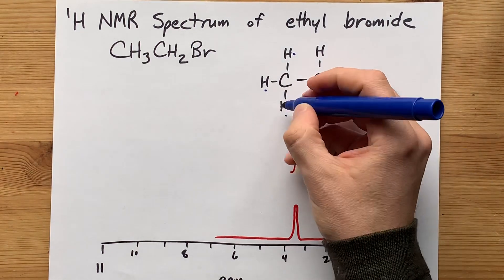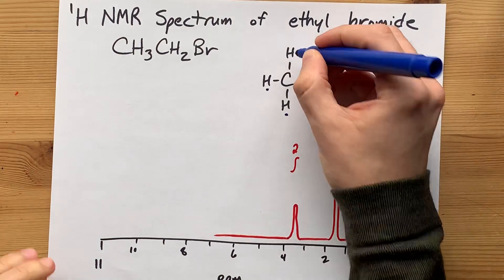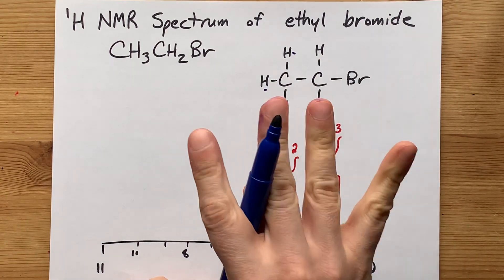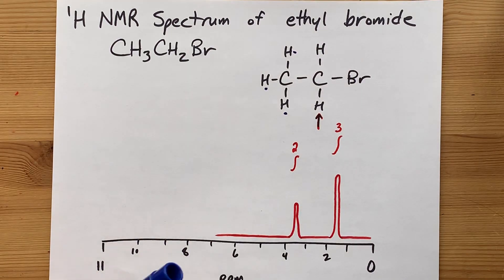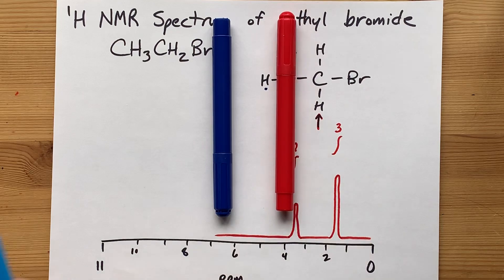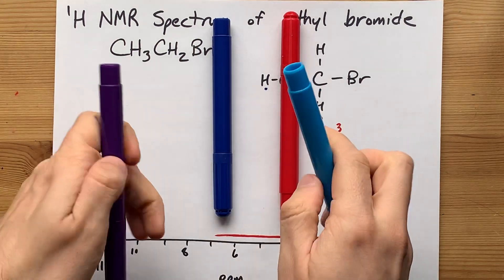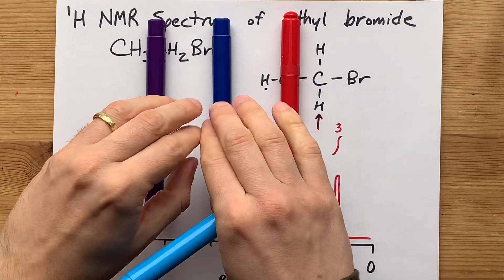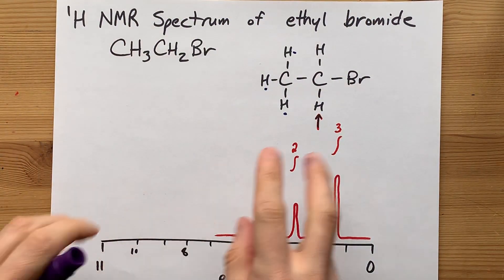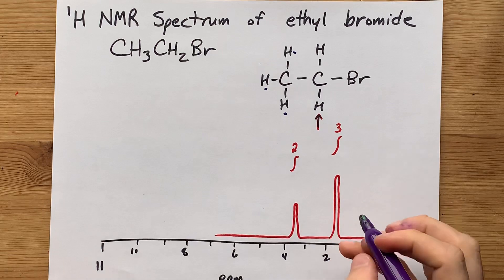So, three adjacent hydrogen atoms will split this peak into four things. If you start out with one peak and you split it once, it becomes two, and then if you split it again, it becomes three, and then if you split it again, it becomes four. So, you end up with what's called a quartet instead.